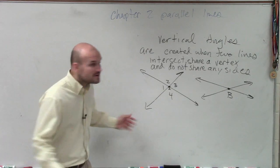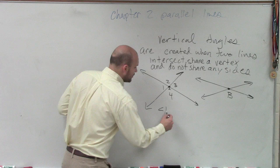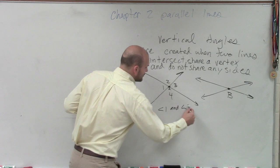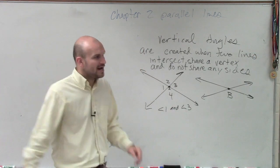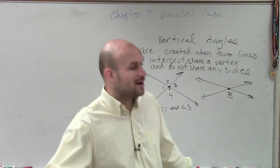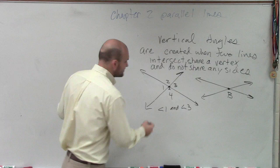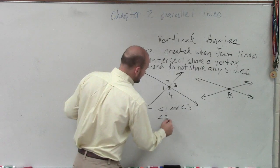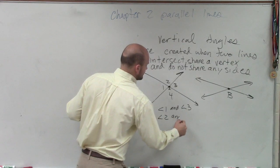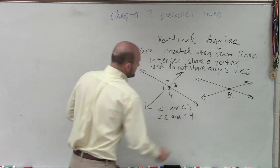One and three. Guess what? Angle one and angle three are vertical angles. Good job. Ding, ding, ding, ding, ding, ding. Anybody want to find the other pair? Yeah? Two and four. You guys are too smart. Very good.